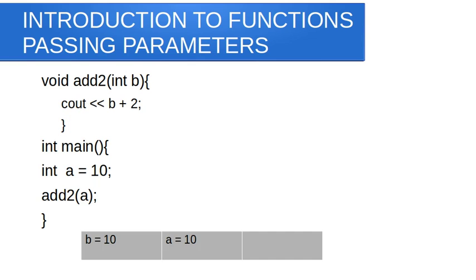Let's look at a simple code snippet to understand this more. I've created a function called addTo — it takes in a parameter with data type int and identifier name b. This function takes a number, adds 2 to it, and prints it to the screen. In our int main function, I've created a variable called a with a value of 10. When we call the function and pass in a, by default b is zero in memory. Passing a copies its value of 10 into the memory location where b is stored. So b becomes 10, and 10 plus 2 gives us 12. The arguments passed to the function are copied into the parameter variables.